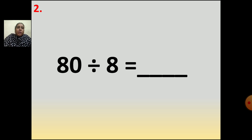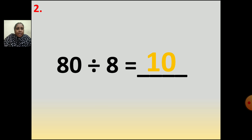So what is your answer, children? Your answer is 10. 8 tens are 80. So 80 divided by 8 is equal to 10.